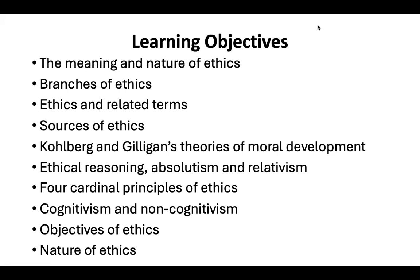These are our learning objectives. We'll be looking at the meaning and nature of ethics, branches of ethics, ethics and related terms, sources of ethics, Kohlberg and Gilligan's theories of moral development, ethical reasoning, absolutism and relativism, four cardinal principles of ethics, cognitivism and non-cognitivism, and objectives of ethics. The nature of ethics will be clear from the very first slide where we look at the meaning and nature of ethics.